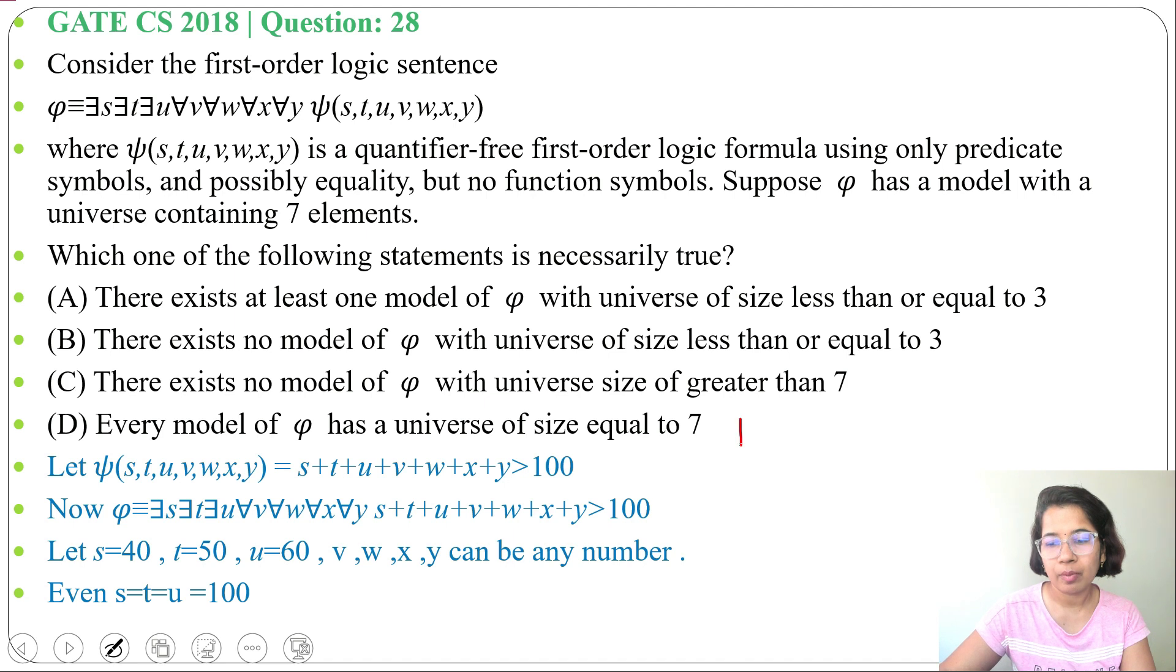Let's consider 101. Suppose s equals 101. Then when s is 101, t,u,v,w,x,y can be anything.